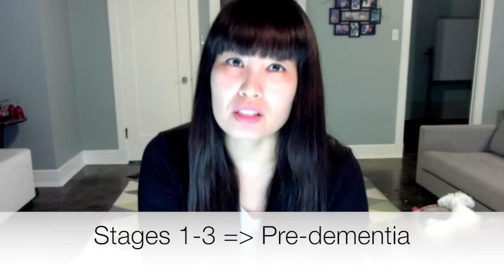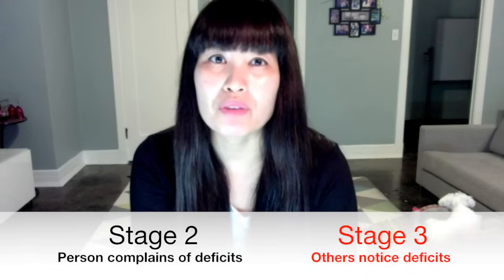Stage 3: mild cognitive decline. It's still hard to get a very clear diagnosis at this stage, and we're still in the pre-dementia stage. This is where family, friends, and those closest to the individual may begin to notice deficits in memory and recall. I'm going to tell you a personal story to help illustrate this stage. Just a few days ago, I took my dog Stella to my mother's house and asked her to watch her for a few hours.